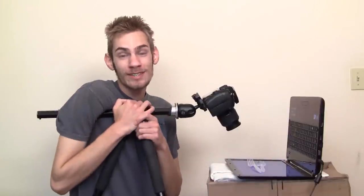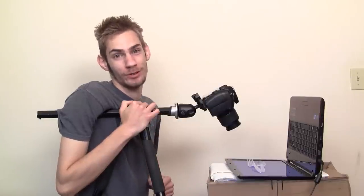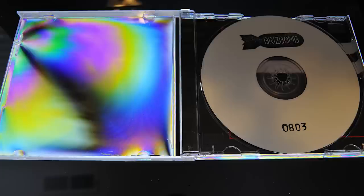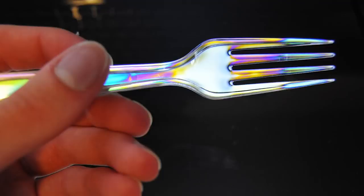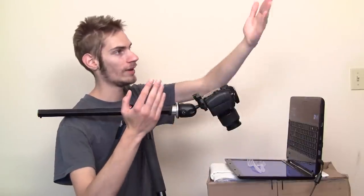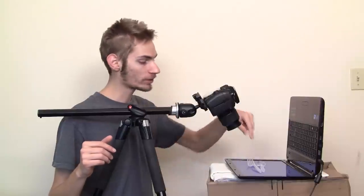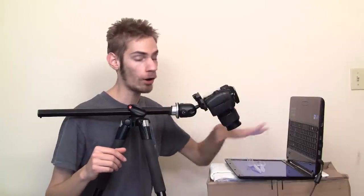What's up everyone, it's the Photo Extremist, and in this tutorial I am going to show you how to make this picture. This is a little photography effect called photoelasticity. This is where you have two polarizing filters — one behind a plastic object and one in front of it. The one behind the plastic object needs to be a linear polarizer.